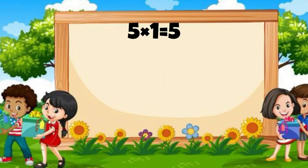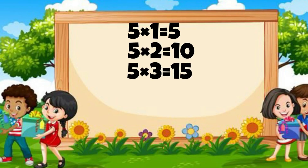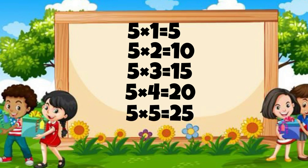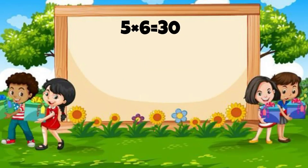Five ones are five. Five twos are ten. Five threes are fifteen. Five fours are twenty. Five fives are twenty-five. 5 6s are 30.